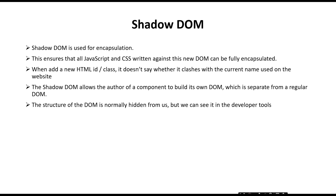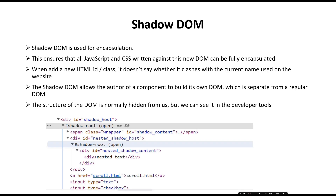The structure of the DOM is normally hidden from us — we cannot see it directly — but we can see it in the developer tools when we inspect the element. There we can see how the DOM structure looks like. In the source code, shadow-root is mentioned here; there is a second shadow-root, one shadow-root within another shadow-root. This shadow-root separates this section from the main DOM, so any CSS selectors applied here will not override classes from the main DOM. CSS IDs and classes like 'wrapper' or 'shadow-content' applied in the main DOM will not clash with this because this is its own DOM structure.